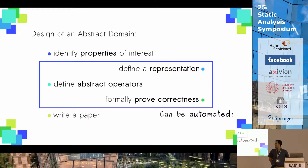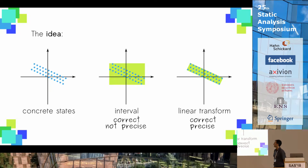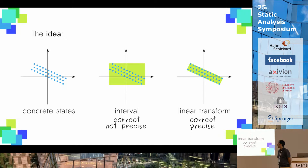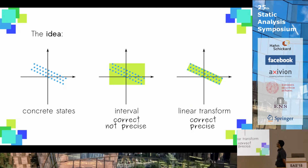The good news is that part of this work, under some hypotheses, can be automated by using this transformation. For instance, this depicts the idea: on your left, you can see a set of concrete program states represented by some blue dots. In the center, you can run the interval analysis on the states and get the result, which is correct by definition, but also not super precise — there is a lot of empty space, which means loss of precision. If we just transform our analysis so that instead of using a rectangle we use a rotated rectangle, we can obtain the abstraction you can see on the right, which is still correct and also much more precise.